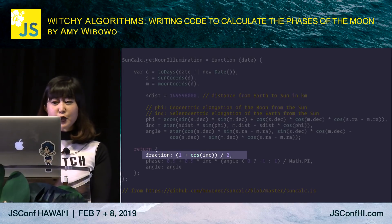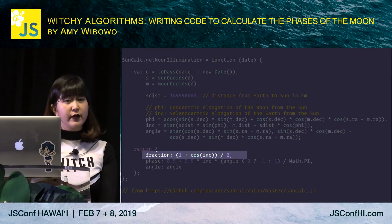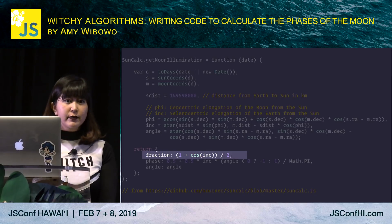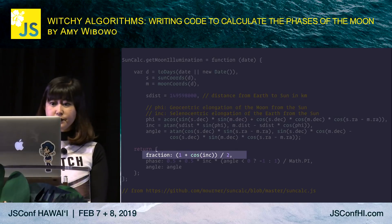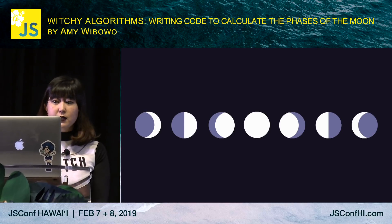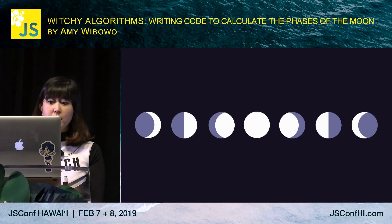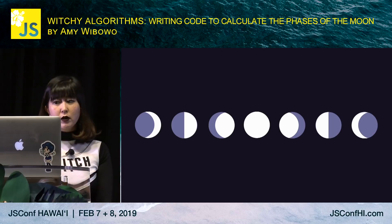And when I say first principles, I mean very first principles. Let's start off with a very basic question: what even is a moon phase? Depending on the day, sometimes we see the moon as a crescent, sometimes we see half of the moon lit, and sometimes we see the moon as a full circle. What causes this?